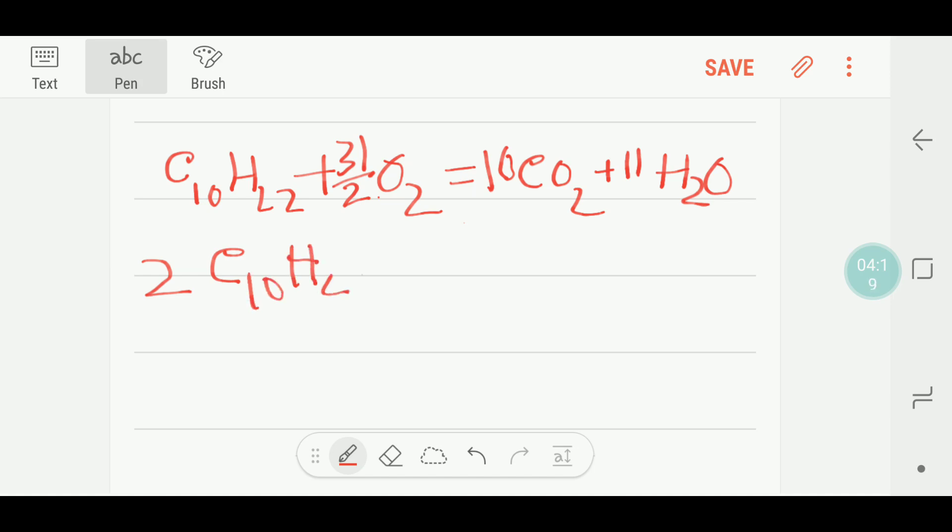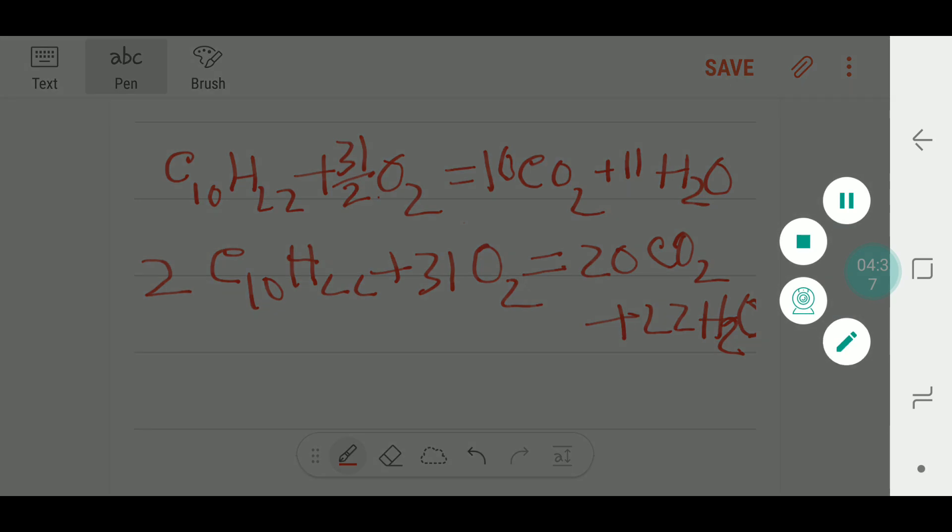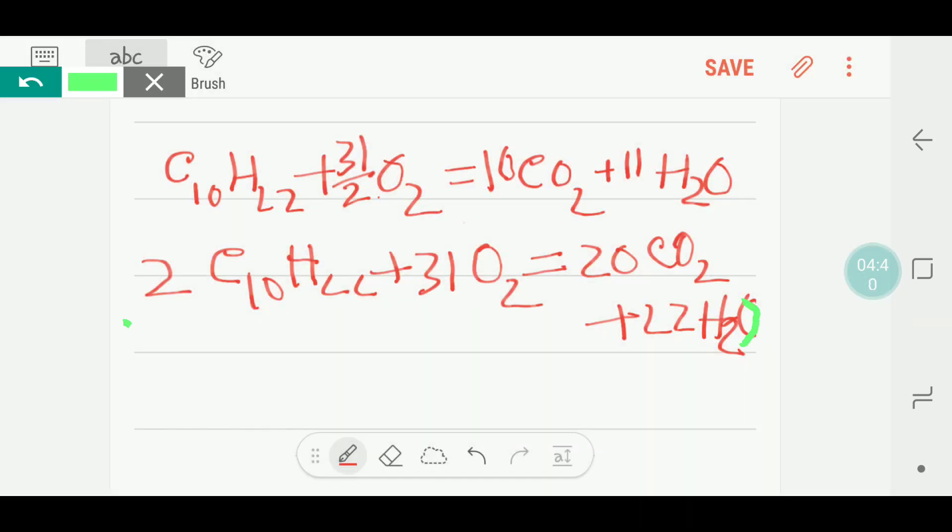If you multiply by 2, then you will get 31 oxygen, 20 carbon dioxide, and 22 water. So this is the balanced reaction of decane.